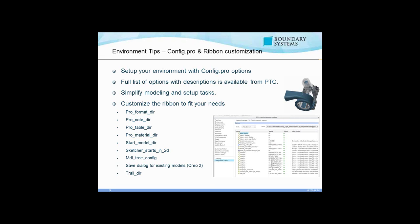The Sketcher Starts in 2D config option relates to an old school behavior from Wildfire 4 and older, where entering Sketcher would always orient the model 2D parallel to your screen. Starting around Wildfire 5 or Creo 1, they changed it so you can sketch in 3D, leaving the model in its current 3D orientation. Some users prefer the 2D orientation and can set the config.pro option accordingly, while others prefer to sketch in 3D.